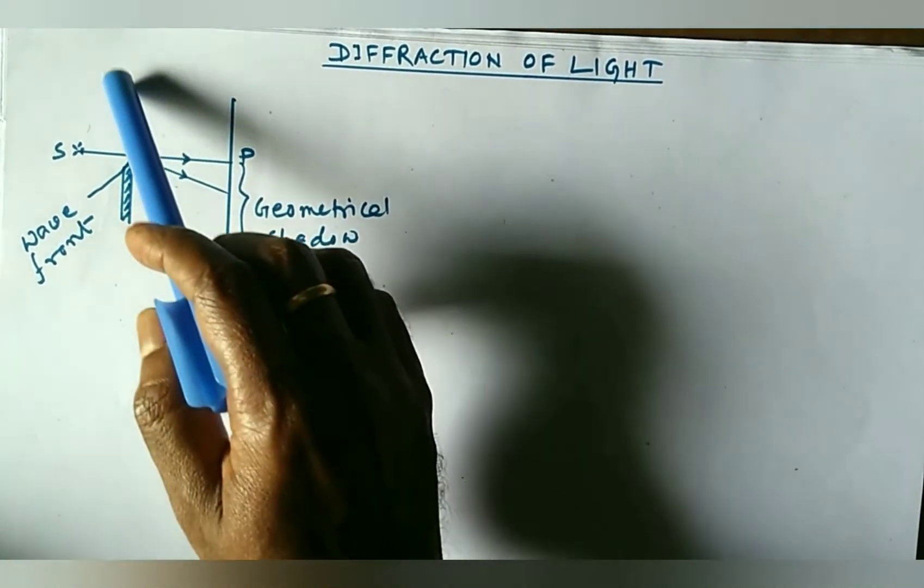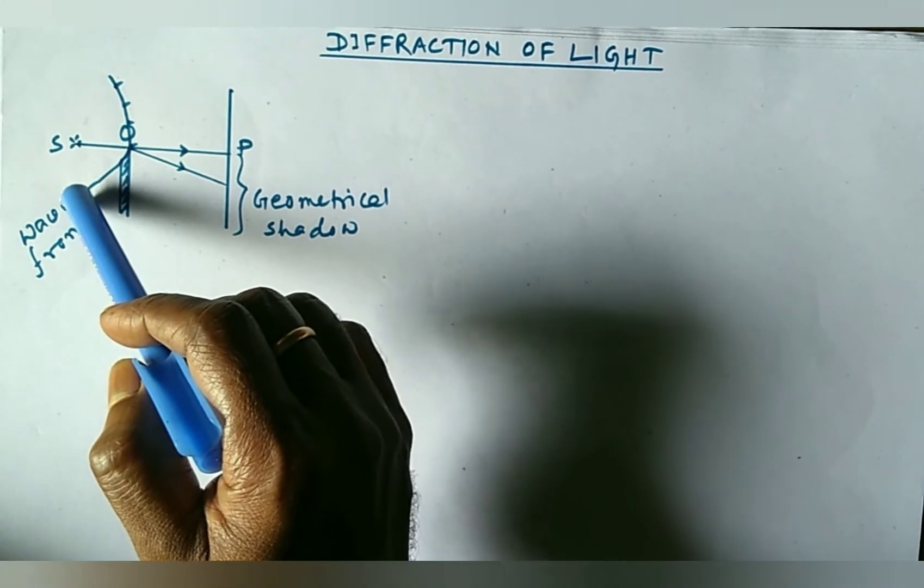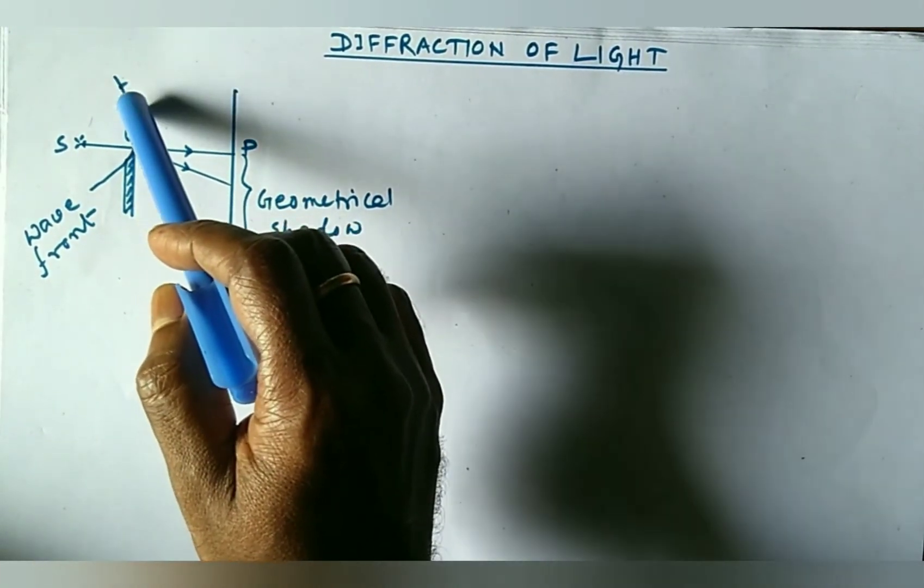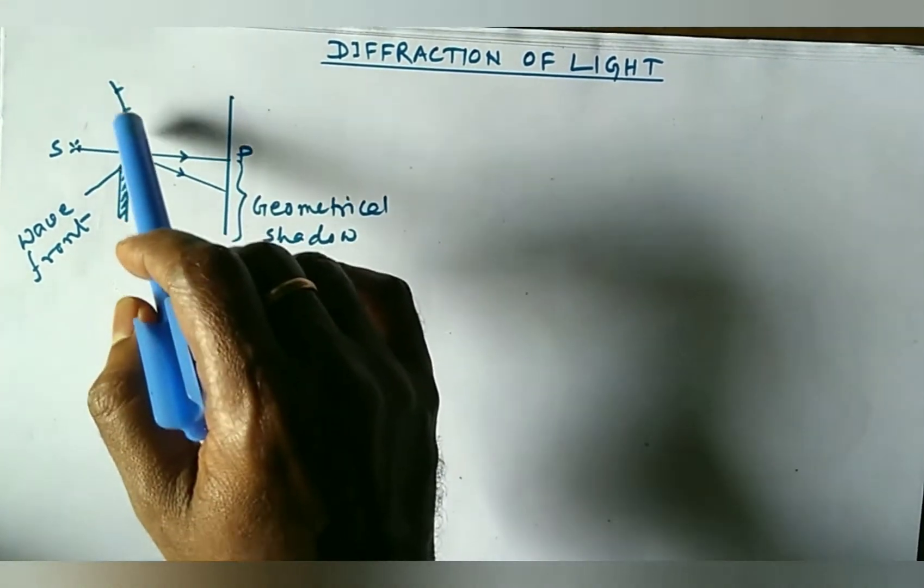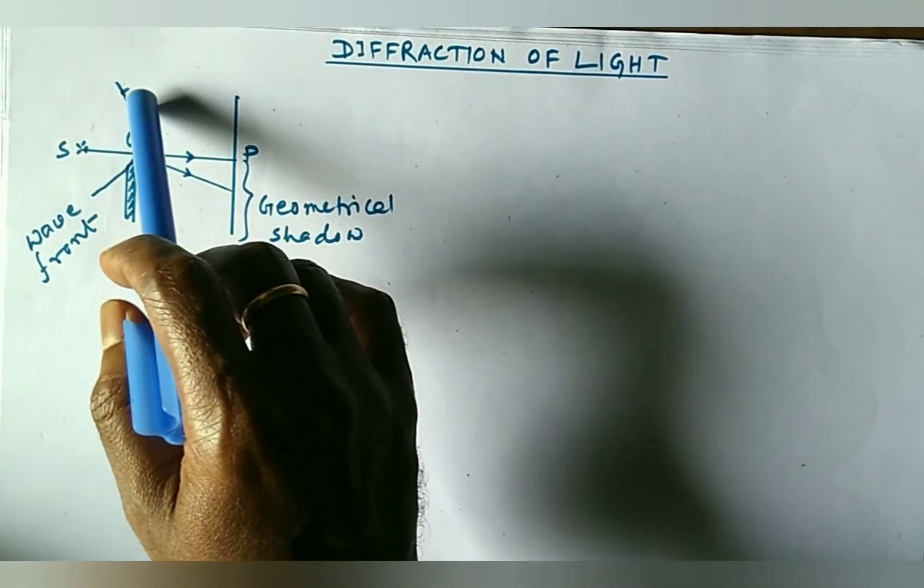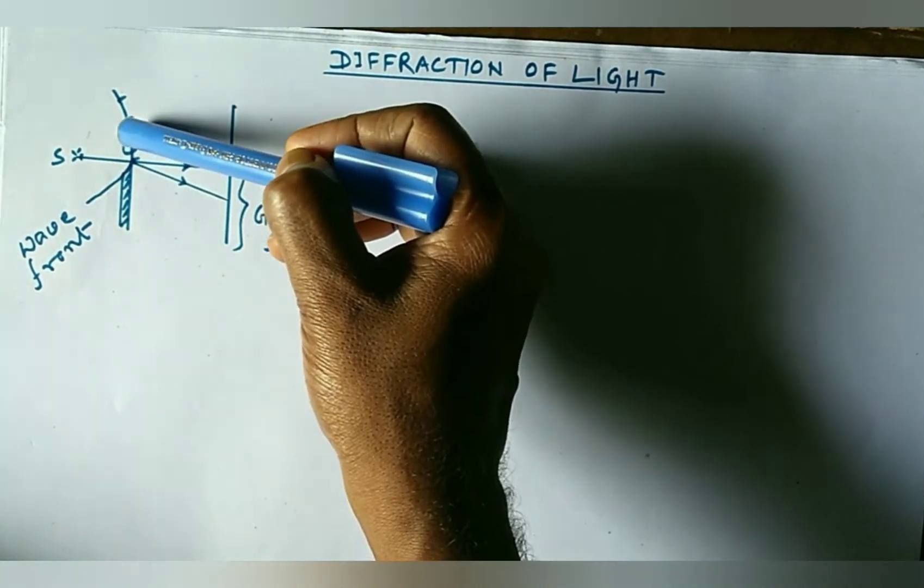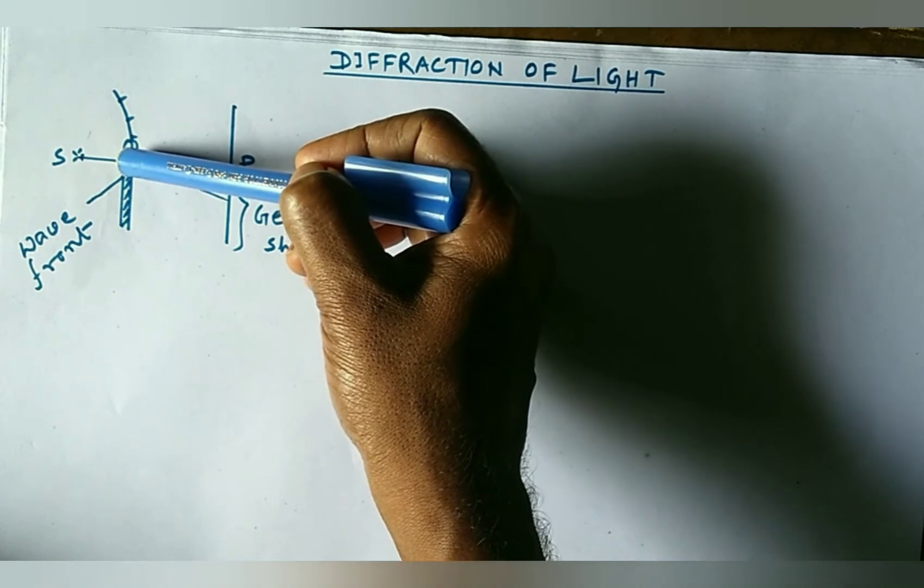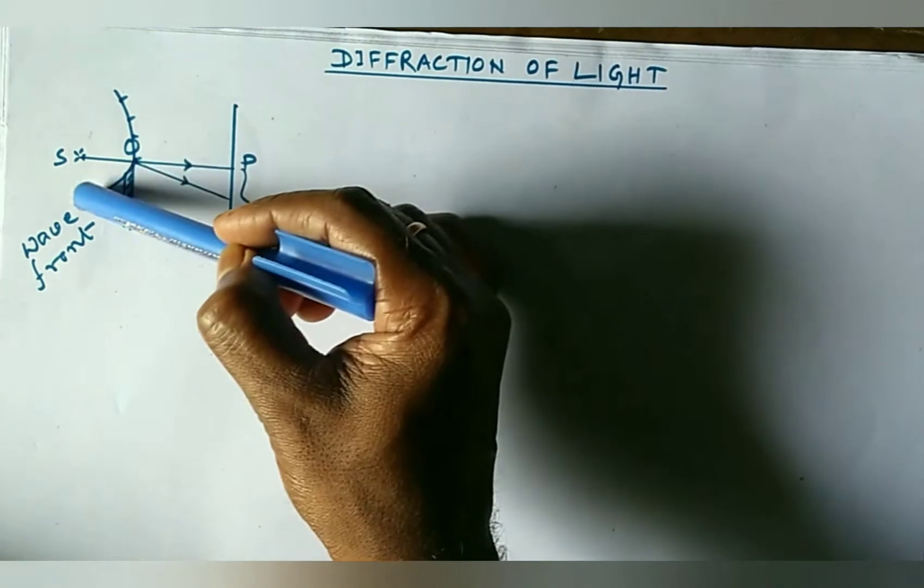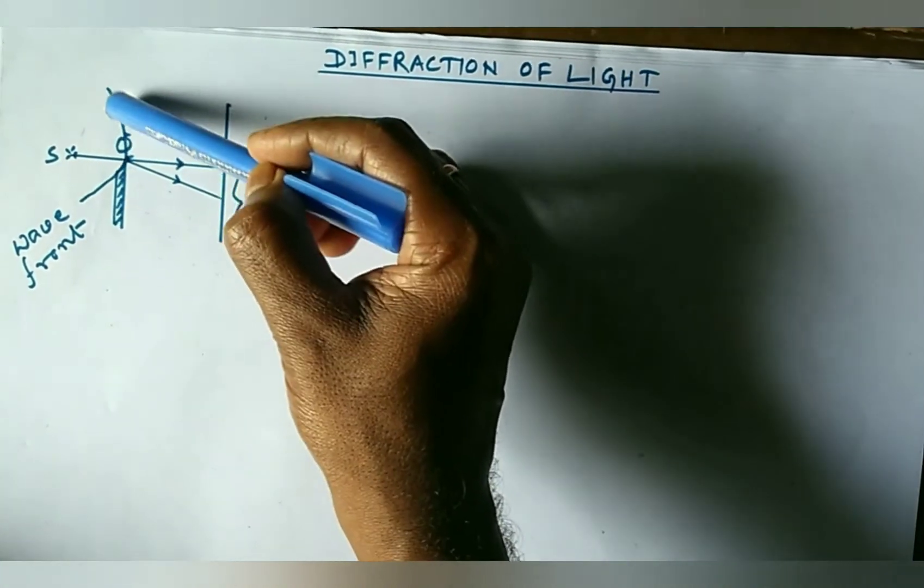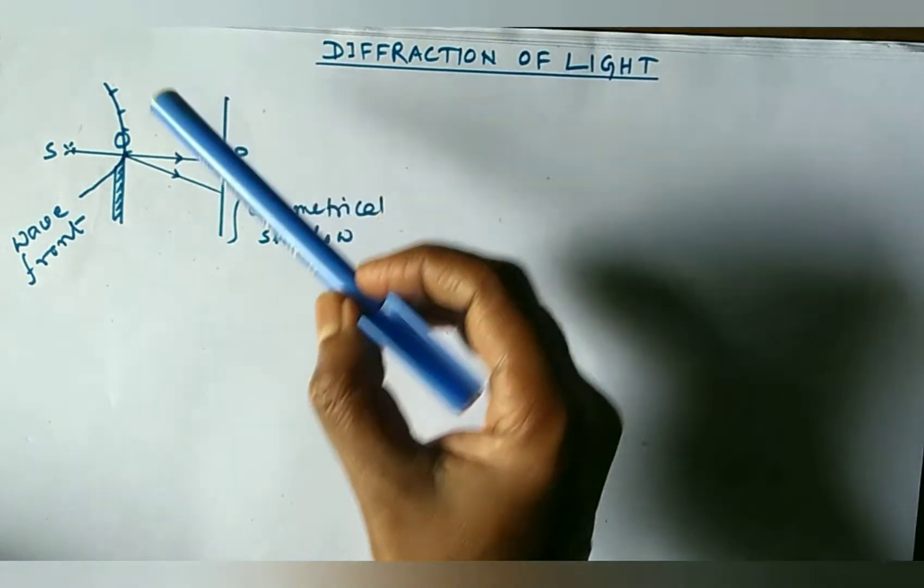According to Huygens, each point on the primary wavefront acts as the source of secondary waves. The mutual interference of these secondary waves from here, here, here and here on the particular wavefront produces the phenomena of diffraction.